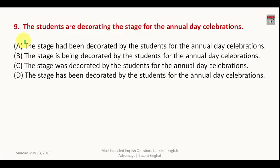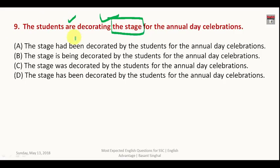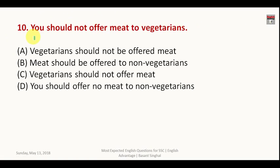Question number nine: 'The students are decorating the stage for the annual day celebration.' The object is 'stage', so the sentence starts with 'the stage'. This is present continuous tense, so the passive uses 'is being'. The answer is B: 'The stage is being decorated by the students for the annual day celebration.'